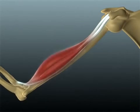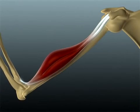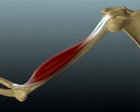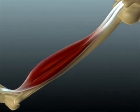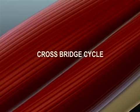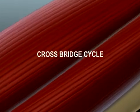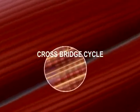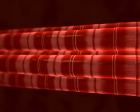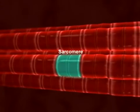The contraction of a skeletal muscle generates the force necessary to move the skeleton. A contraction is triggered by a series of molecular events known as the crossbridge cycle. In a skeletal muscle fiber, the functional unit of contraction is called the sarcomere.